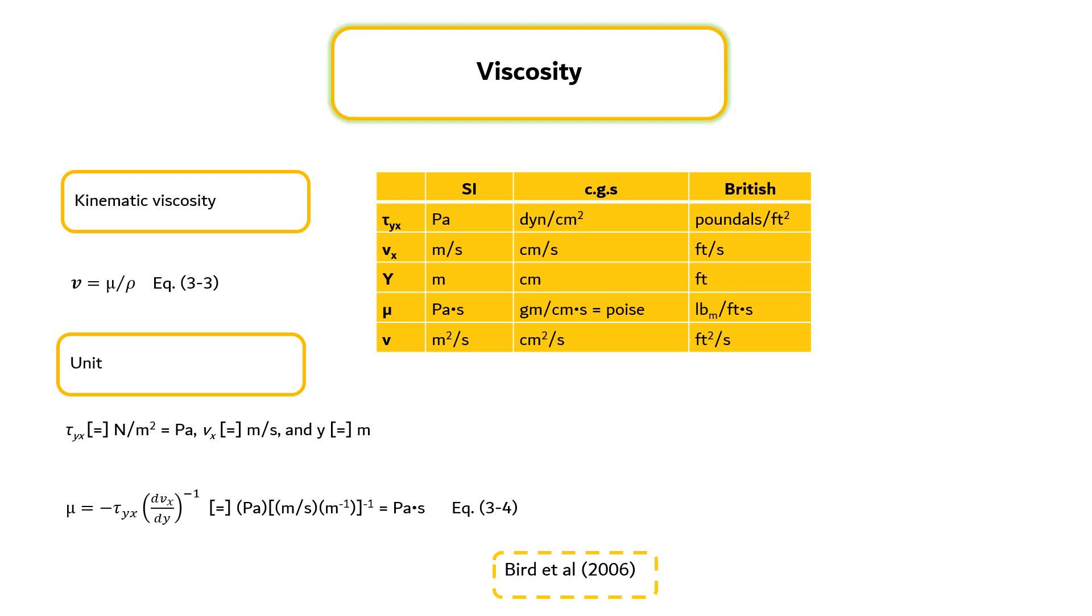The viscosities of fluids vary over many orders of magnitude, with the viscosity of air at 20 degrees C being 1.8 times 10 to the power of minus 5 pascal second, and that of glycerol being about 1 pascal second, with some silicon oils being even more viscous.